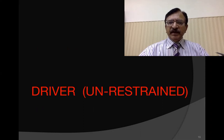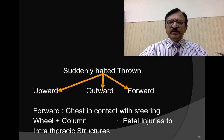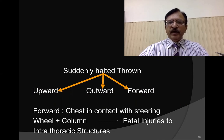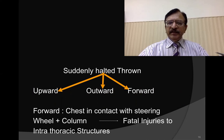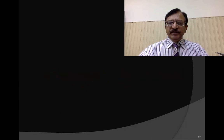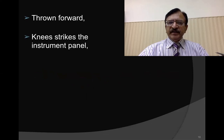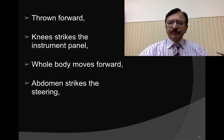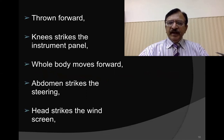If the driver is unrestrained — that is, has not applied the seat belt — when the vehicle is suddenly halted, he is pushed upward, outward, and forward; the driver is violently thrown up, out, and forward. In the forward movement, the chest comes in contact with the steering. So with frontal impact, the driver is thrown forward: the knee strikes the instrument panel, the whole body moves forward, the abdomen strikes the steering, and the head strikes the windscreen.